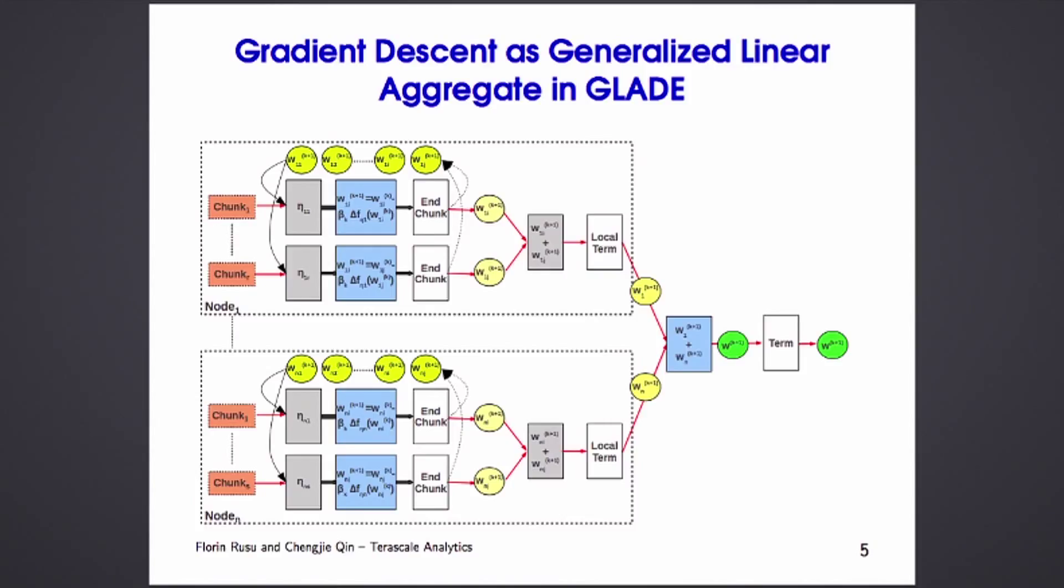The good part about these user-defined aggregates is that if you take the problem that I showed you before, training models and running gradient descent, that's nothing else than an aggregate problem. You can write it as a group by aggregate for a lot of models. Because of that, you can take the gradient descent, express it as a UDA, and then you can run it into a database. That's exactly what we have done into a system that we call GLAID that we developed for the past five years.